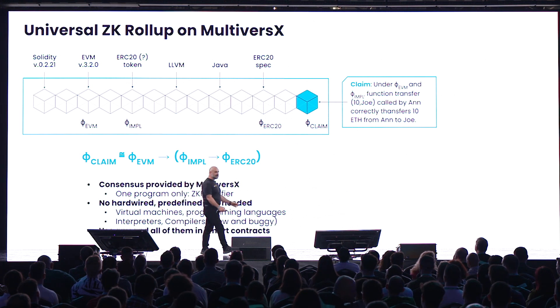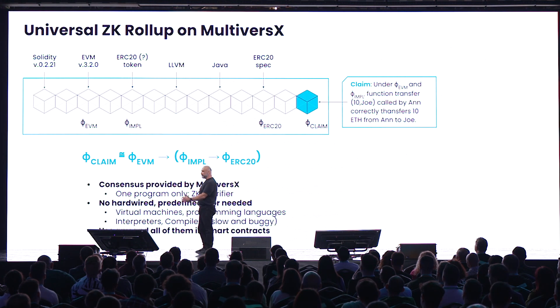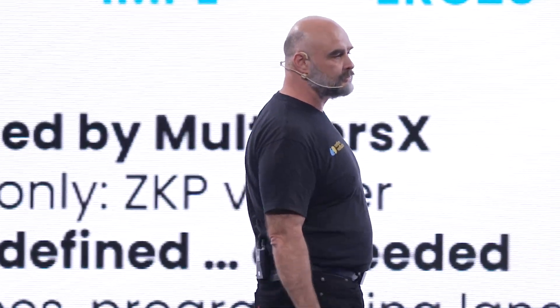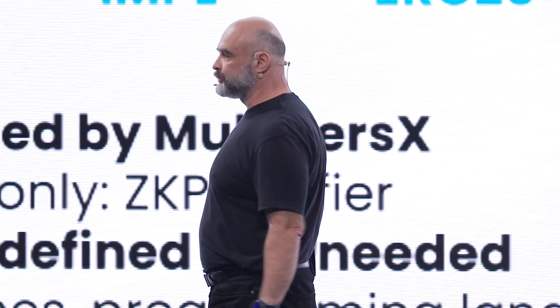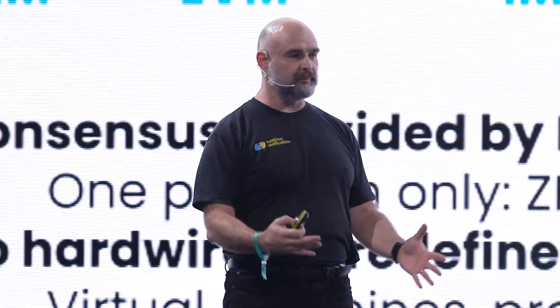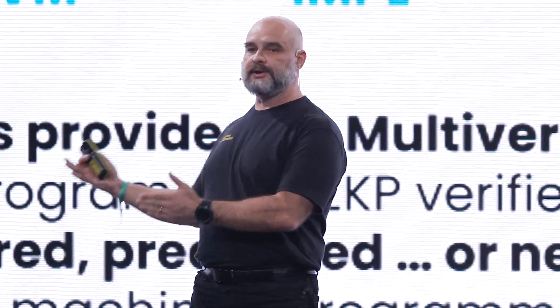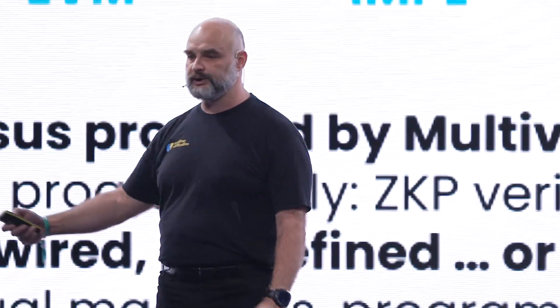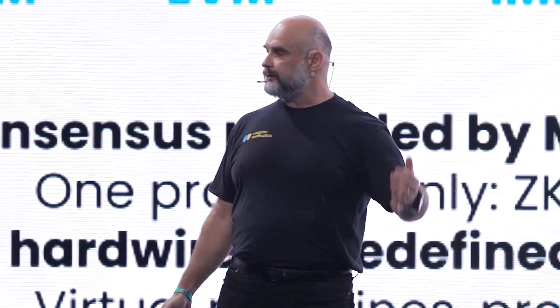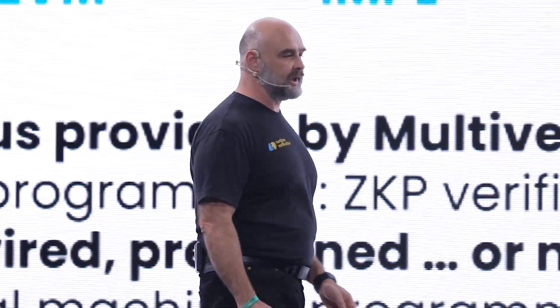We plan together with the amazing MultiverseX team to bring this all to MultiverseX. Programming languages, virtual machines, and specifications of various protocols — all of these, which are usually hardwired in programs, will be plain data on the blockchain or in the rollup. For example, Solidity will be stored at a unique address, EVM the same, ERC-20 template the same, and even conventional languages like C, Java, and LLVM. All of these will become mathematical theories — formal semantics — stored as data on the blockchain.